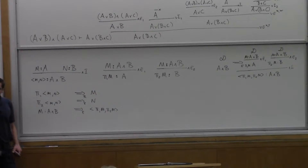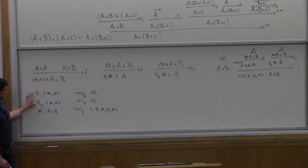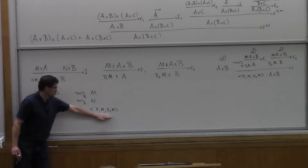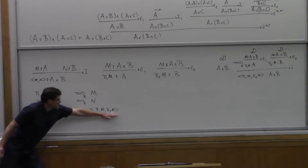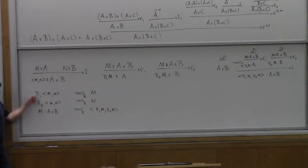When we look at the operational semantics of a programming language based on these constructs, these are actually computation rules because they reduce the term into smaller ones. The expansion is more of an equality which says any term of A and B is equal according to its type to some expansion of the components. So we don't compute with the expansion rule, but we compute with the two reduction rules.